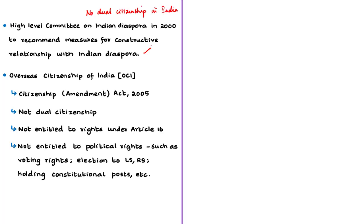Based on the committee's recommendations, the government of India decided to register persons of Indian origin (PIOs) of certain specified countries as overseas citizens of India. As a result, the Overseas Citizenship of India (OCI) scheme was introduced by amending the Citizenship Act of 1955 through the Citizenship Amendment Act of 2005. This scheme provides for registration of persons of Indian origin as overseas citizens of India.